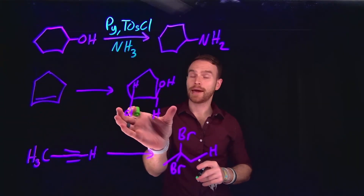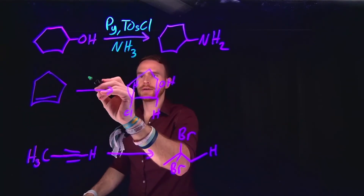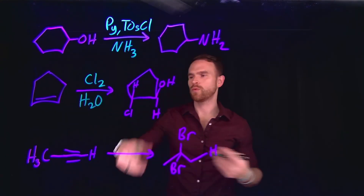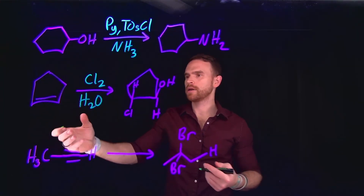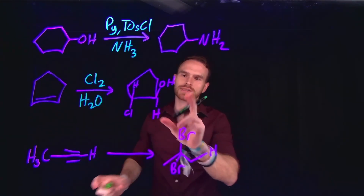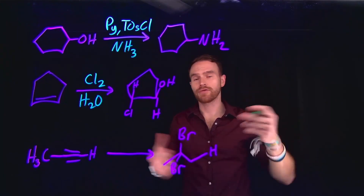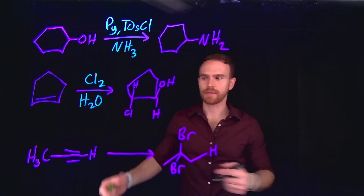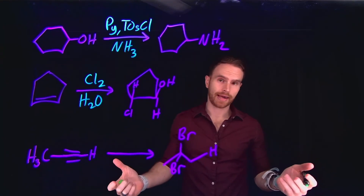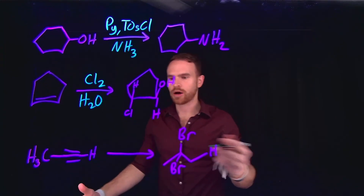The next one involves forming a halohydrin from an alkene, requiring two things: chlorine and water. This occurs via a two-step mechanism where you're likely forming a halonium ion — creating a three-membered ring with a chlorine on it. Then you get backside attack from the alcohol to give anti-addition, where the chlorine and the alcohol group are adding on opposite sides of the molecule. This is a halohydrin type of molecule.